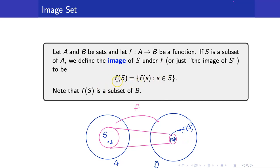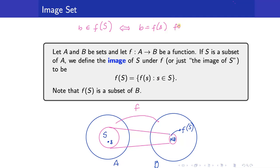Take note this is important: when do we say that an element in B is an element of F of capital S? Since F of S is a subset of B, we say that b is an element of F of capital S whenever we can write b as F of small s for some small s that is an element of capital S.